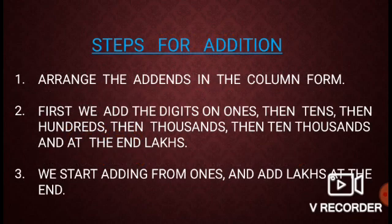Steps for Addition. First, arrange the addends in column form—arrange the digits at various places: ones, tens, hundreds, thousands, ten thousands, and lakhs. Second, we add the digits starting from ones, then tens, then hundreds, then thousands, then ten thousands, and at the end lakhs. Third, we start adding from ones and add lakhs at the end.